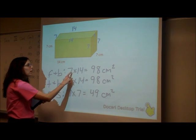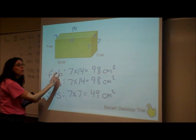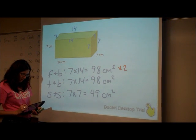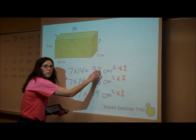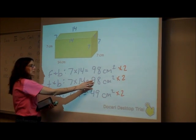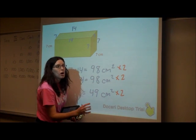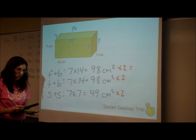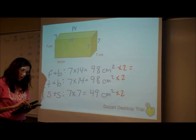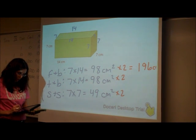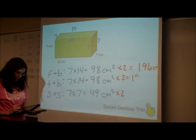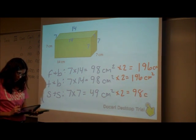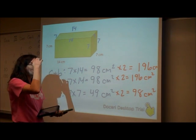Here's what you've got to remember: 98 was the area of just my front. The back is going to be the same thing. So I want to multiply each of these by 2. Multiplying by 2 will give me the area of my front and my back. This was just the top — multiplying by 2 gives me the area of the top and the bottom. And 49 was one side, so multiplying by 2 gives me the area of both sides. So 98 times 2 is 196 square centimeters, and 49 times 2 is 98 square centimeters. It's all area, so it's all square units.